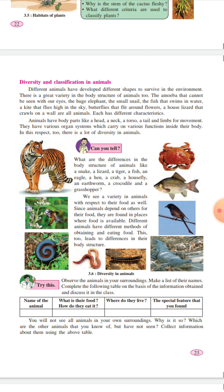These are all diversity among these animals. We see variety in animals with respect to their food as well. Since animals depend on others for their food, they are found in places where food is available. Different animals have different methods of obtaining and eating food.